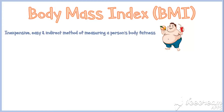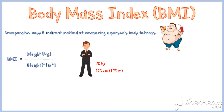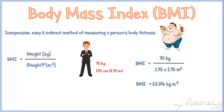BMI is calculated by dividing the person's weight in kilograms by the square of the person's height in meters. For example, if we take a 70 kilogram person with a height of 175 centimeters or 1.75 meters, we divide 70 kilograms by the square of 1.75 meters, and we get the BMI value of 22.86 kilograms per square meter.